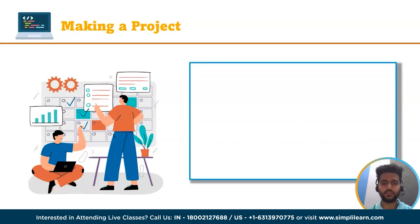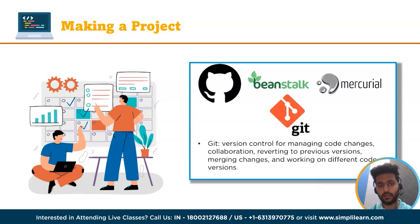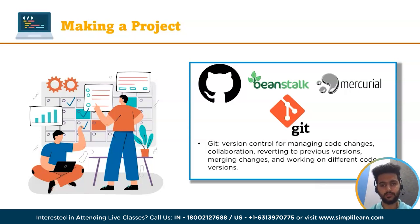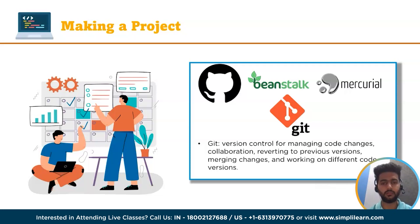Beginners can also use version control systems like GitHub, Beanstalk, Mercurial or Git. Git is a version control system that enables developers to manage their source code and collaborate with other developers effectively. It allows developers to track changes in their code, revert to previous versions, merge changes made by different developers, and work on different versions of the same codebase simultaneously.